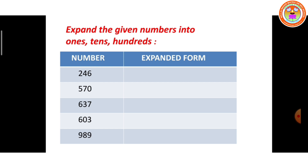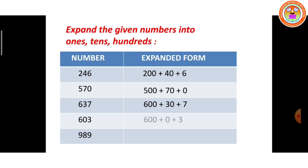Expand the given numbers into 1s, 10s, and 100s. 246: 6 in the 1s place, 4 in the 10s place, 2 in the 100s place — so 200 plus 40 plus 6. Next: 500 plus 70 plus 0. Then 600 plus 30 plus 7. Then 600 plus 0 plus 3. Then 900 plus 89.